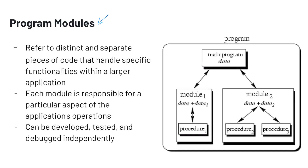Program modules refer to distinct and separate pieces of code that can handle specific functionalities in a larger program. An example would be in a Python script. If we want that program to have different capabilities or functionalities, an example of using program modules would be having multiple functions in that program — or methods if we're using Java parlance — and having each separate functionality we want our program to address contained in its own function.